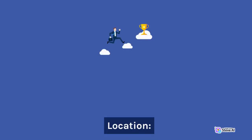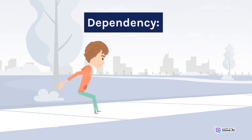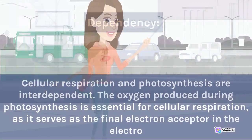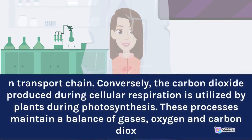Location: The location of these processes is dependent on the cell type. Dependency: Cellular respiration and photosynthesis are interdependent. The oxygen produced during photosynthesis is essential for cellular respiration, as it serves as the final electron acceptor in the electron transport chain. Conversely, the carbon dioxide produced during cellular respiration is utilized by plants during photosynthesis. These processes maintain a balance of gases, oxygen and carbon dioxide.